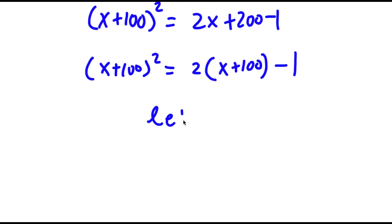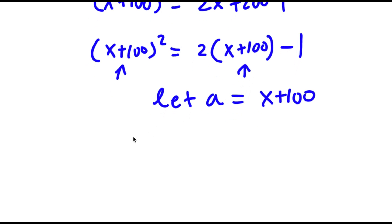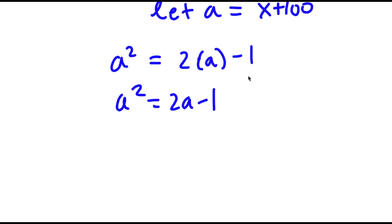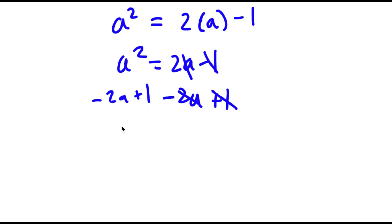Now I'm going to let the variable a equal x plus 100. So now if I substitute in a for x plus 100, we have x plus 100 here and x plus 100 here. So now I have a squared is equal to 2 times a minus 1, which is the same thing as a squared is equal to 2a minus 1. I'm going to subtract 2a and add 1 on both sides. So I'll be left with a squared minus 2a plus 1 is equal to 0.